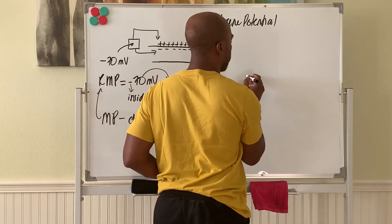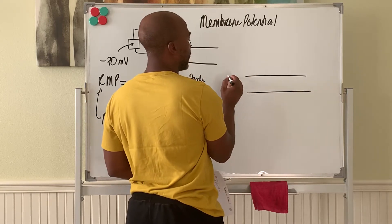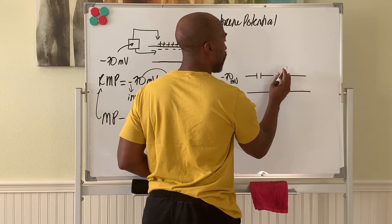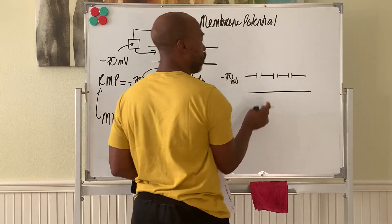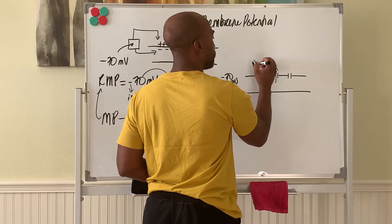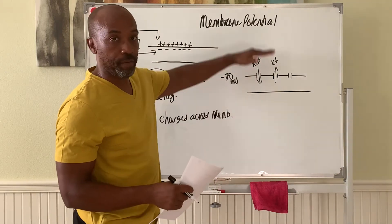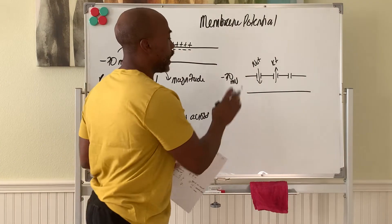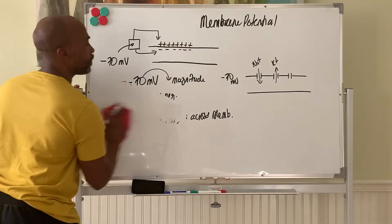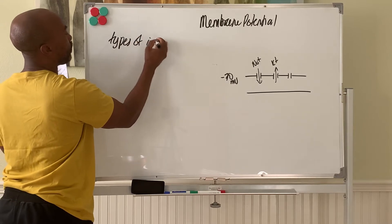In a neuron, the neuron can sit at negative 70 millivolts, but it can also use ion channels to let ions cross over, because ions can come in through channels or leave through channels. For example, sodium ions can come into the cell, and potassium ions can leave the cell. As these ions flux across the membrane, this value will change. So let's discuss the types of ion channels that you have in the membrane.